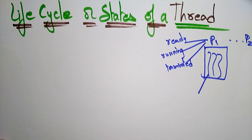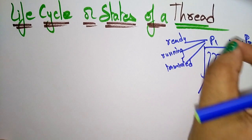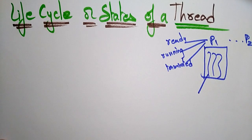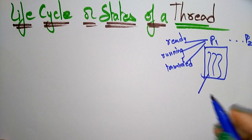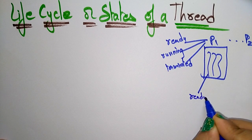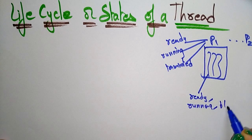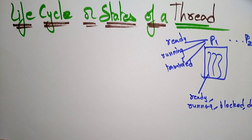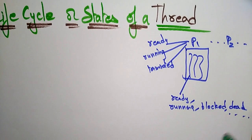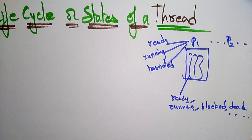Just like a process, threads also have different states. A thread may be in ready state, running state, blocked state, or dead state. Just like a process, a thread also changes its states based on conditions, usage, and requirements of the users.